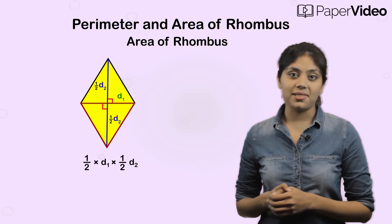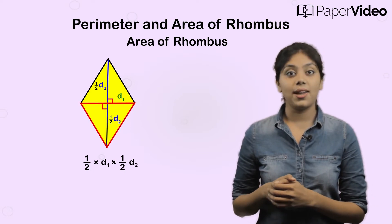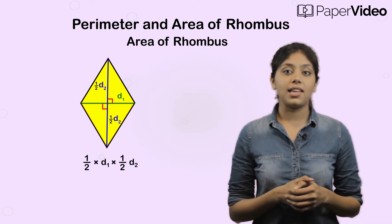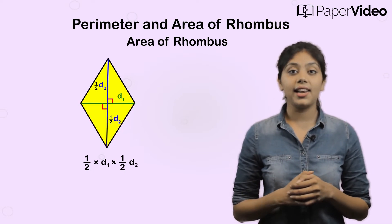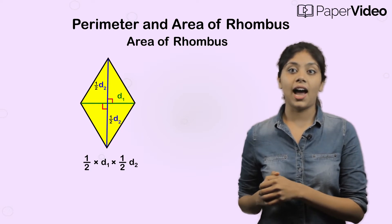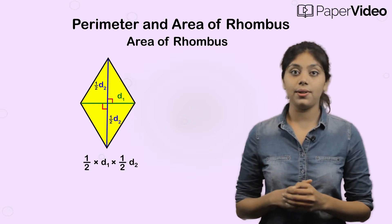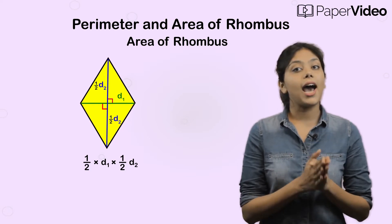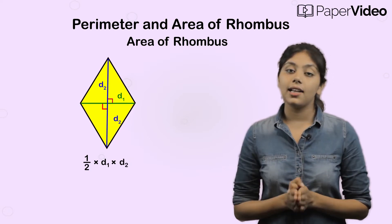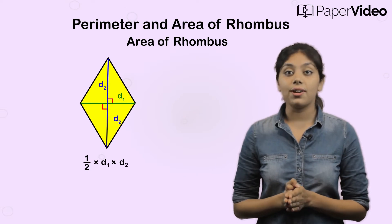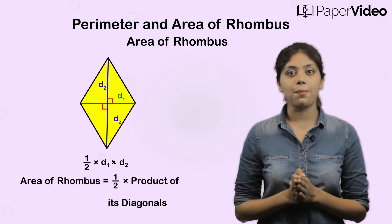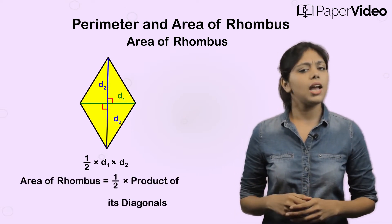Since a rhombus is two times this triangle, the area of the rhombus will be two times the area of this triangle: two times half times D1 times half times D2, which equals half times D1 times D2. Therefore, the area of a rhombus is half times the product of its diagonals.